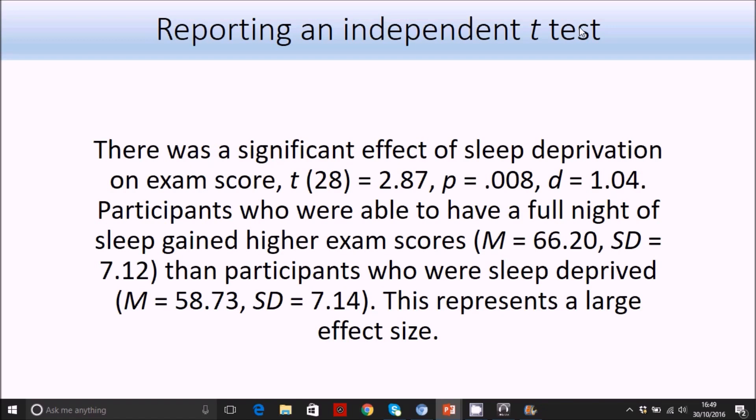If you wanted to report this t-test and write it up, you could write something like this: There was a significant effect of sleep deprivation on exam score. Report the test statistics including your effect size, and then report the mean scores but also interpret the direction of the effect. So participants who were able to have a full night of sleep gained higher exam scores than participants who were sleep deprived. As well as reporting the Cohen's D effect size, also report whether that represents a small, medium, or large effect. In our example here, that represents a large effect size. And in the repeated measures design next, I'll just run through how to interpret this and some general guidelines for how to interpret a small, medium, or large effect size.